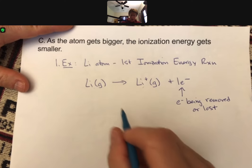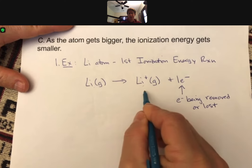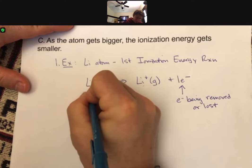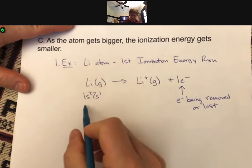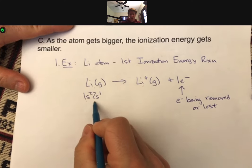And we can do electron configurations for both of these. We have 1s2, 2s1. That's the electron configuration for a lithium atom.